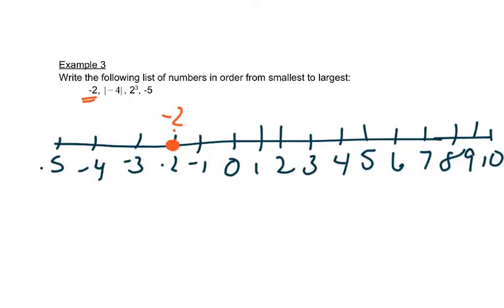This next number says the absolute value of negative four. So the absolute value asks for the distance from negative four to zero and the distance is four. So we would put that answer here on the number line. So this is the absolute value of negative four.